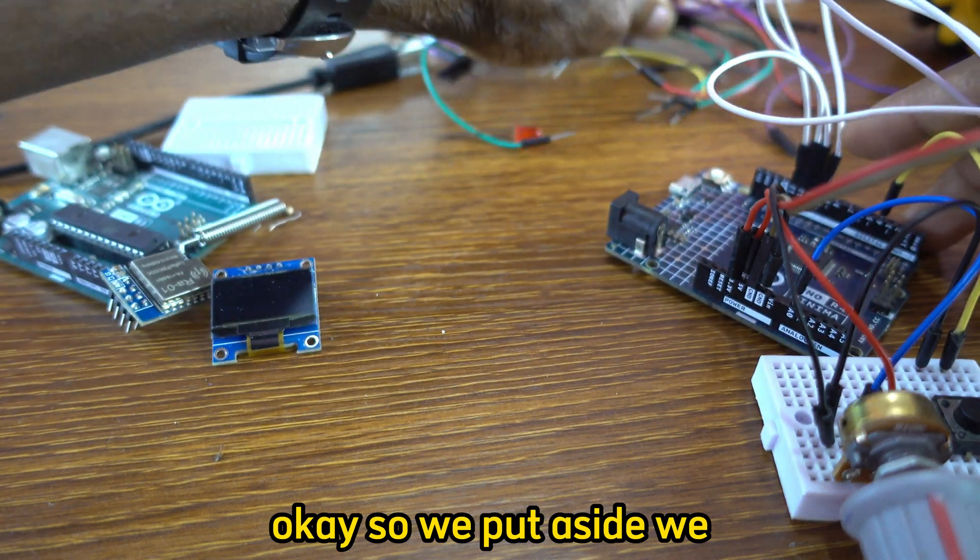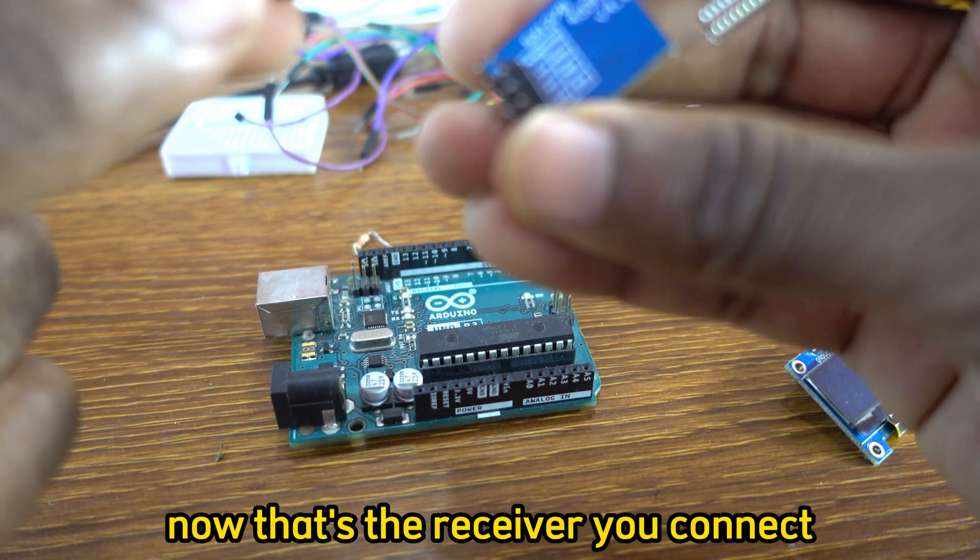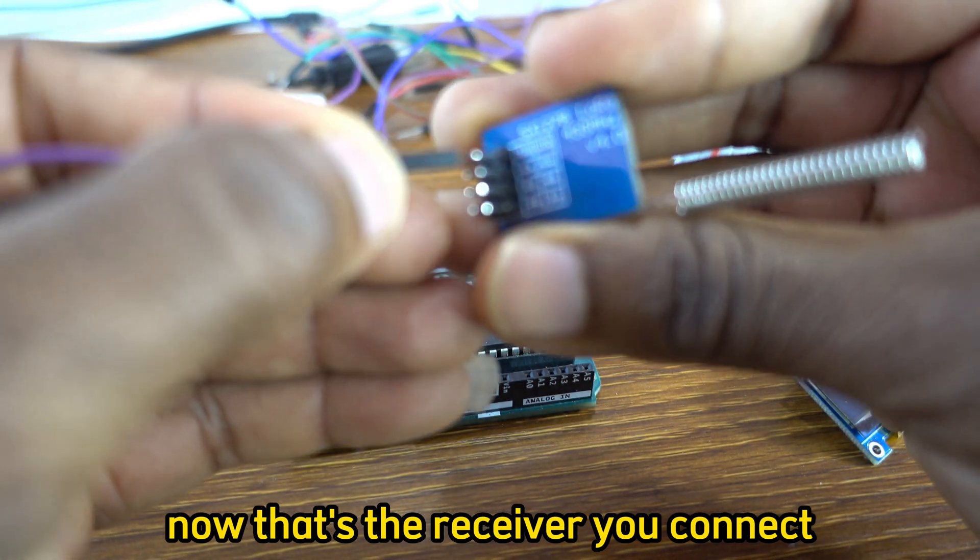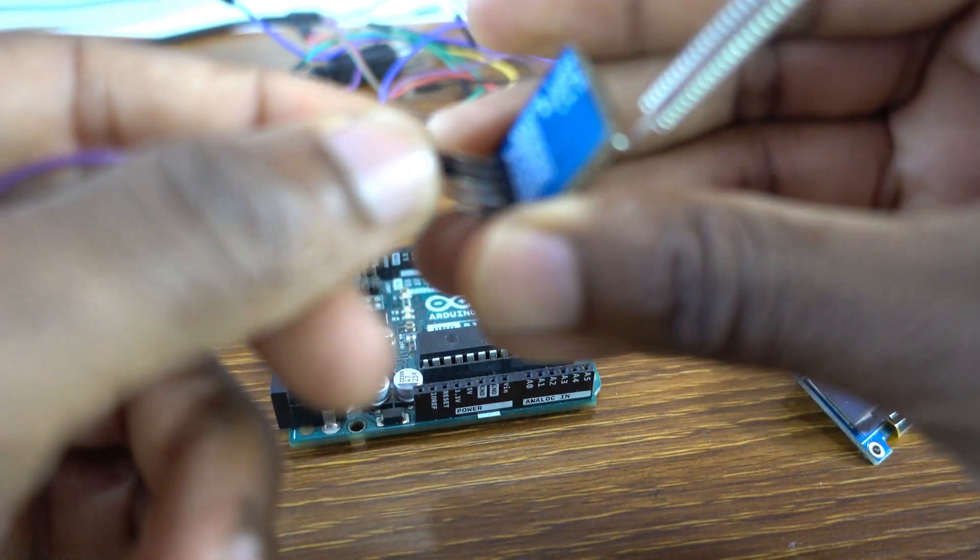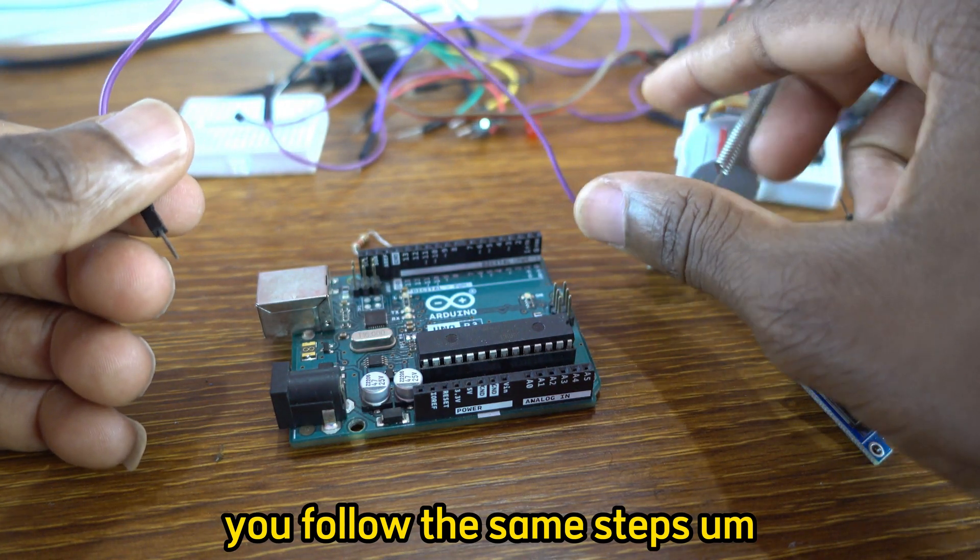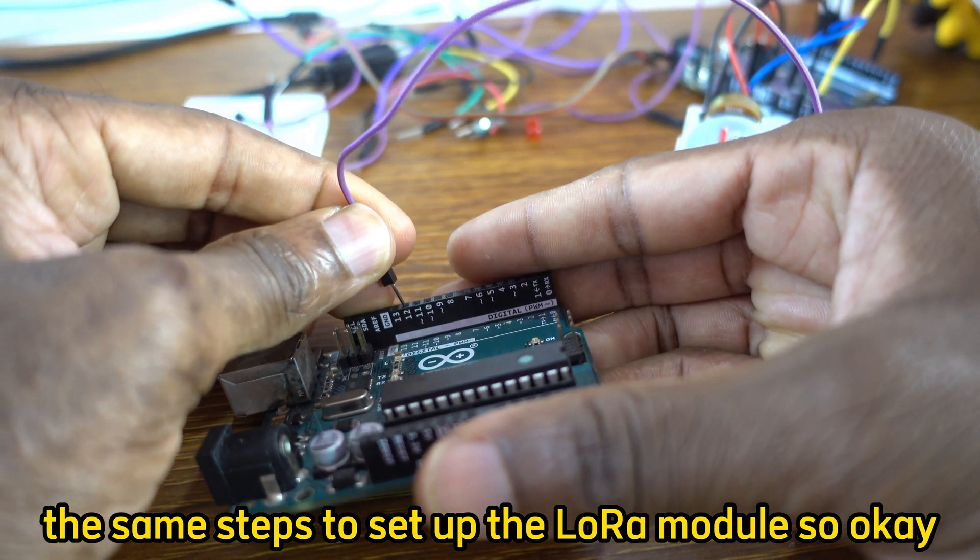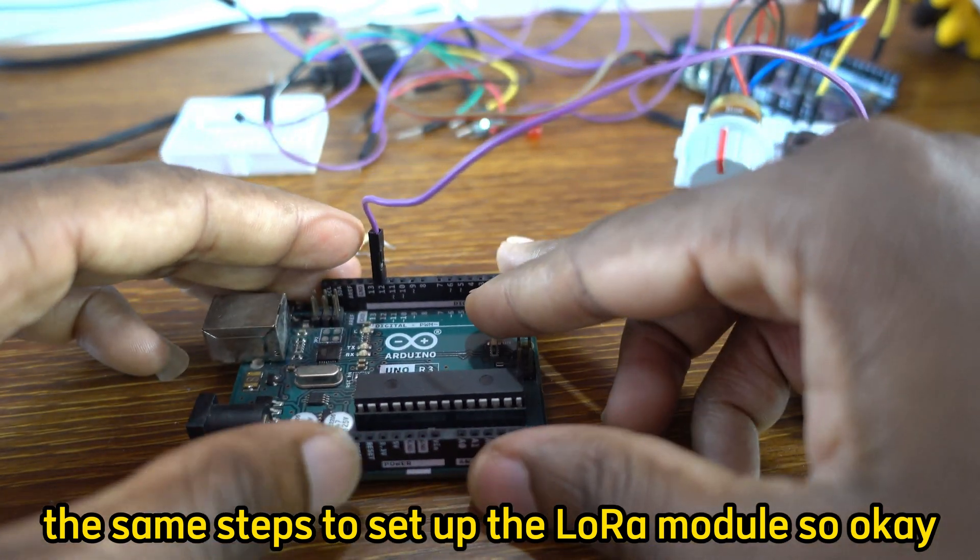We put aside - we are done with the transmitter. Now that's the receiver. You connect, you follow the same steps to set up the LoRa module.